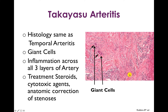Histologically, Takayasu arteritis is indistinguishable from temporal arteritis — you still see giant cells and inflammation across all three layers of the artery. The main differences are the patient population affected and the distribution of vessels involved. Treatment is steroids and cytotoxic agents, and importantly, anatomic correction of the stenosis either with stents or bypass if needed, to restore blood flow to the end organs.